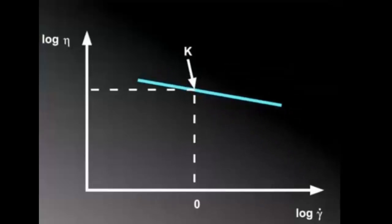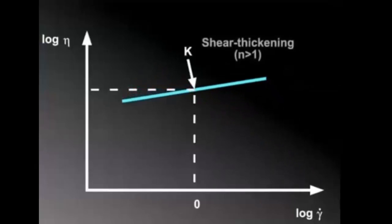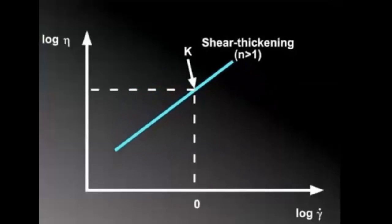Conversely, if n is greater than 1, the fluid is shear-thickening and the viscosity will increase with shear rate.